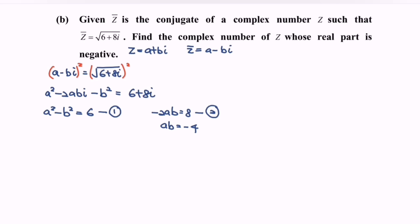Now express a in terms of b using the second equation. So we get a equals negative 4 over b.